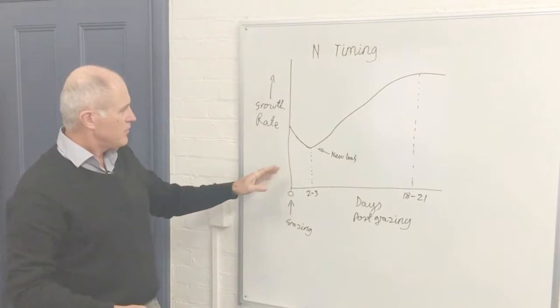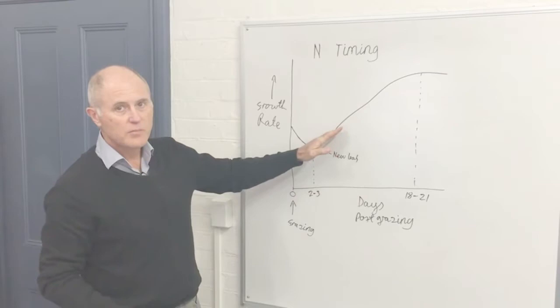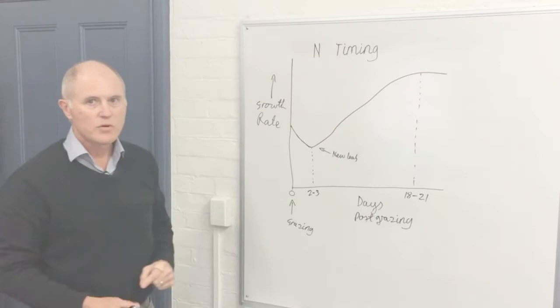We work on a rule of thumb that says for every day that you delay putting on nitrogen after grazing, you lose about one percent of the potential response. You'll be growing somewhere around here rather than up there in what you could have had as a response to nitrogen.